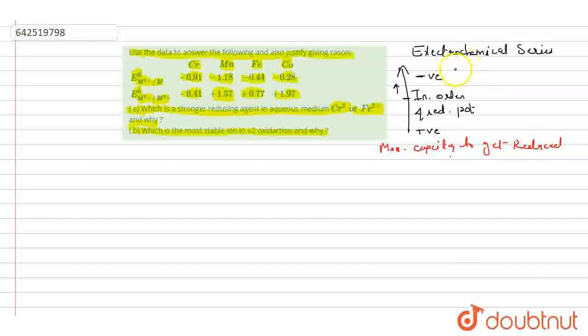On the other hand, substances at the top of the table have lower reduction potential, and therefore they have the least tendency to get reduced. Consequently, they may be oxidized and act as good reducing agents.